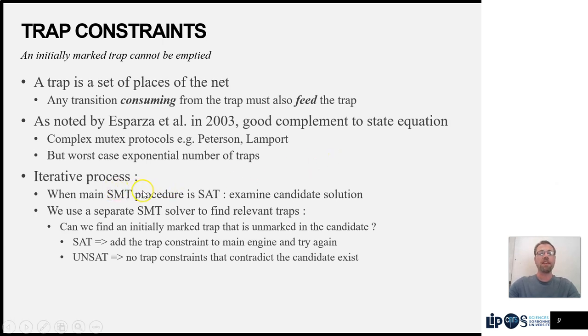So proactively adding all the trap constraints we could find would be counterproductive. Instead, we have this iterative process where each time we find a candidate solution using the main solution procedure, we use a separate SMT instance to find a trap that contradicts this candidate solution. If we can find it, we add a constraint to the main solution engine. Otherwise, we know that there are no trap constraints we can add.